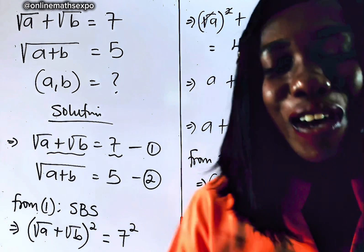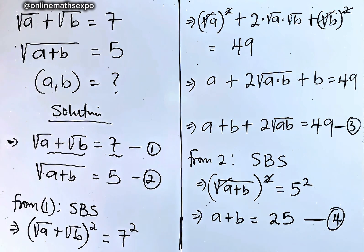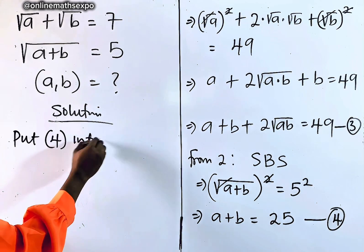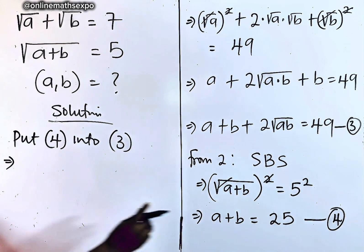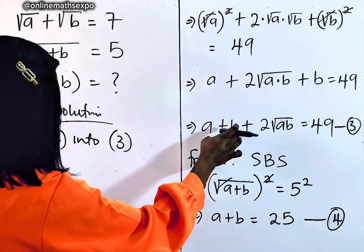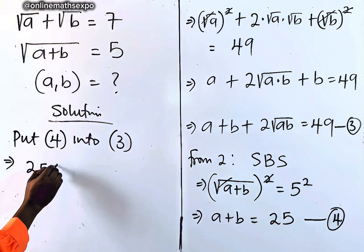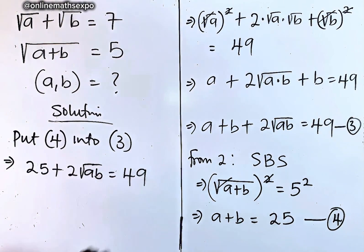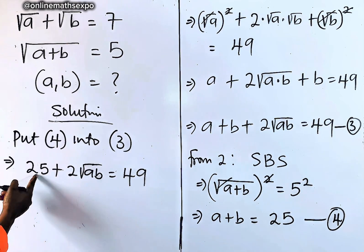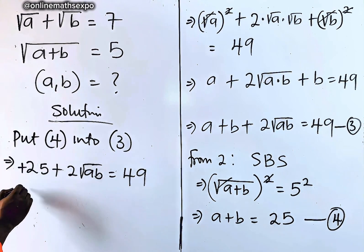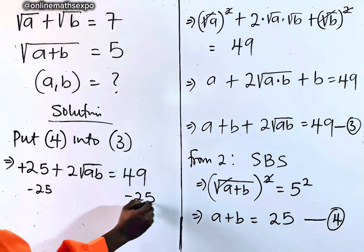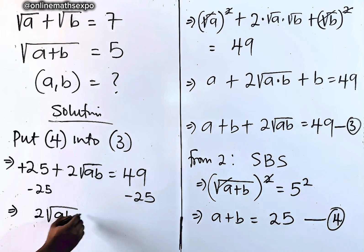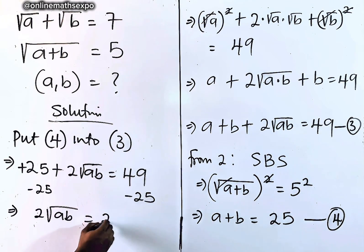Did you observe anything? There is a + b in equation 3, and equation 4 tells us a + b = 25. So we substitute equation 4 into equation 3. Replacing a + b with 25, we get 25 + 2√(ab) = 49. Subtract 25 from both sides: 2√(ab) = 24.